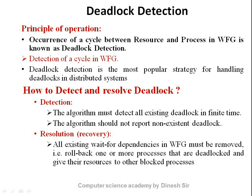Deadlock has one key meaning: if you have a resource or process and a cycle is formed, that is known as a deadlock. The occurrence of a cycle between a resource and process in a WFG — here we are talking about the WFG in a distributed system. WFG and resource allocation graph are two concepts we discussed in previous lectures. WFG means wait-for graph: how resources and processes are connected to each other.